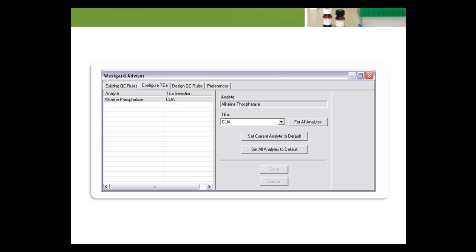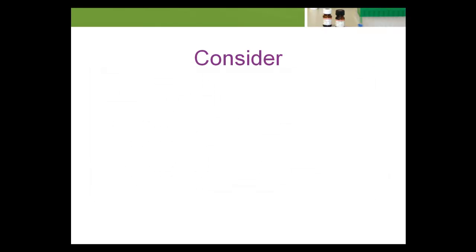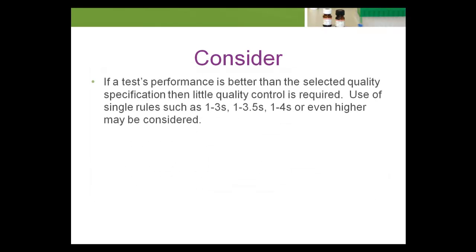This use of TEA evaluates whether opportunities exist to adjust the SPC rules. A few key points to consider are if a test's performance is better than the selected quality specification, then little quality control is required.